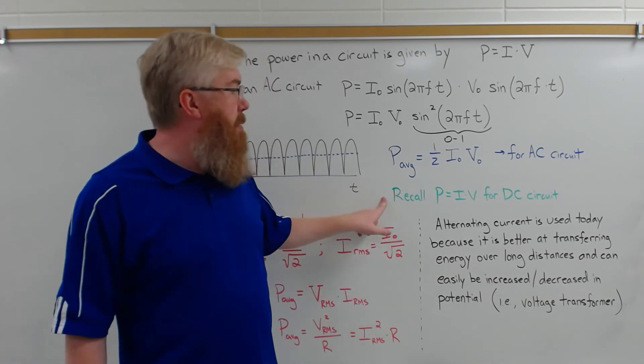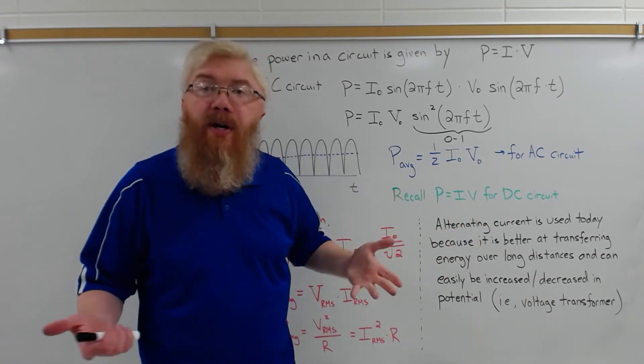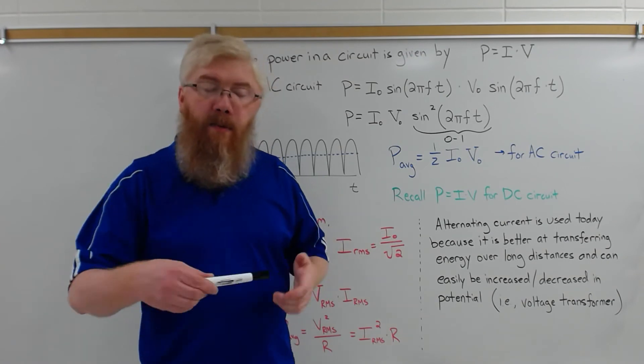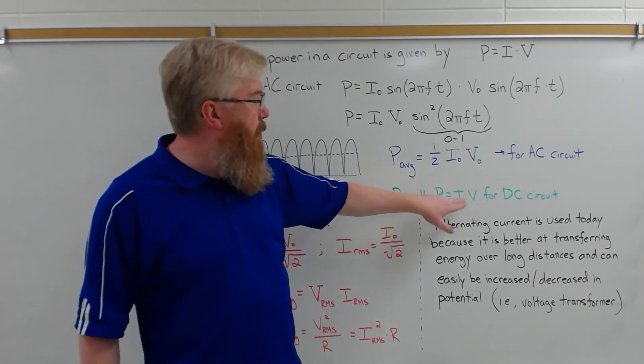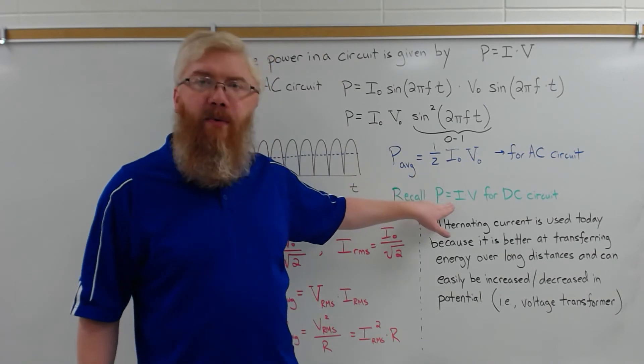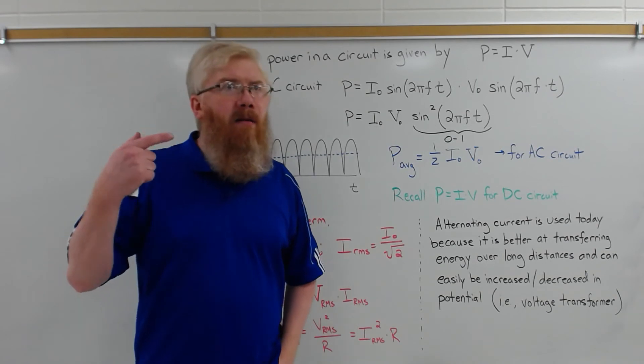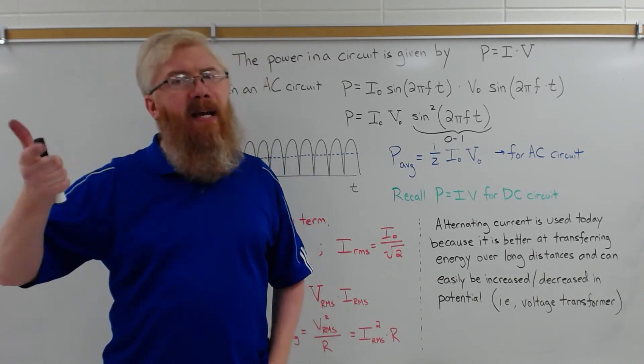So the average power is one-half of the peak power. If this sine term averages to one-half, then the average power is one-half I₀V₀, because I₀V₀ don't change with time. Those are the maximum values. So the average power for an AC circuit is one-half the maximum current times the maximum potential. Well, for a DC circuit, it's just I times V, because those are constants, because the current and the voltage and the potential doesn't change for a DC circuit. But they're two different equations. One has a one-half term in it. The other one doesn't. That's a little confusing. That means that the equation you use depends on if you're using AC or DC current.